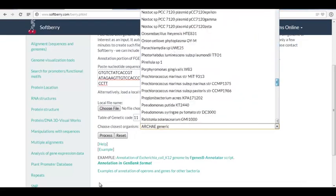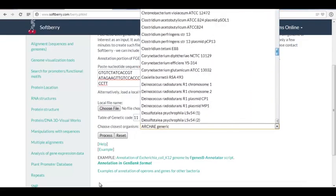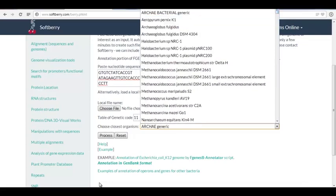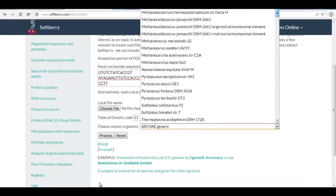scroll down, it's not there. We're going to go to the, well, you'll see that archaea come first, and then the bacteria. This is a bacterial sequence, so we will want to click bacterial generic, and then process.